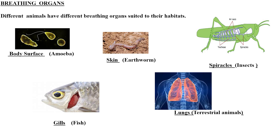Most aquatic animals like fish, prawns, and crabs breathe with the help of gills. These animals take in water through their mouth; the water passes through the gills, and oxygen is absorbed by the gills and reaches every part of the body. The gills then expel carbon dioxide back into the water.